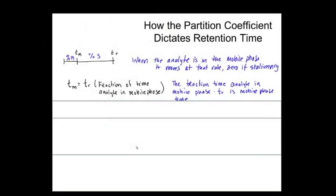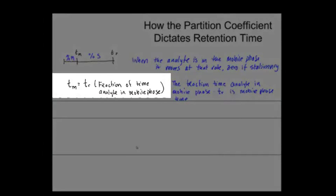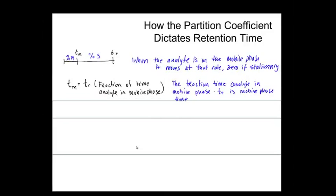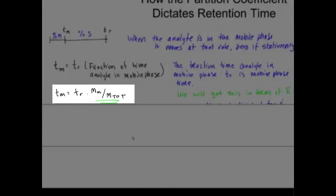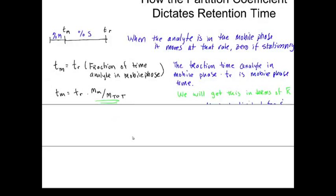So, the first thing we're going to do is realize that the fraction of time an analyte spends in the mobile phase is equal to T_r times basically the fraction of time it's spent in the mobile phase. And so, if it spent 30% of the time in the mobile phase, then the mobile phase time is 30% of T_r. Okay, so, if you bought that, then what we're going to do is just substitute the fraction of time the analyte spends in the mobile phase, which is m sub m over m total. So, the fraction of time it spends there is proportional to the molar fraction.